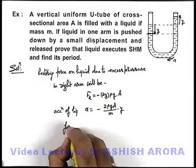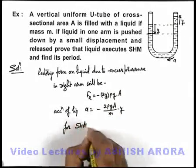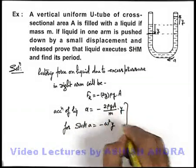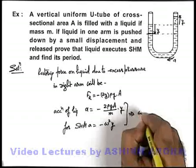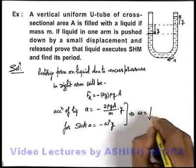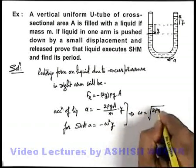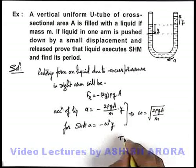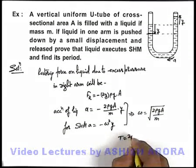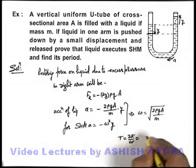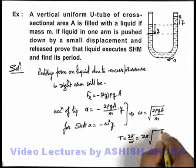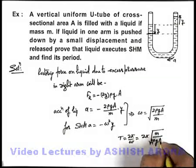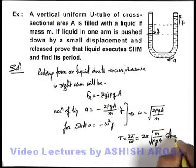And we know for SHM, acceleration is written as minus ω²·y. So comparing these two we get ω as the square root of 2ρgA/m. Hence the time period of oscillation can be written as 2π/ω, which gives T = 2π·√(m / 2ρgA). This will be the answer to our problem.